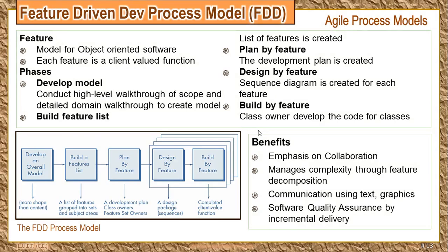The next model is the feature-driven development model, which is used for object-oriented development. Every feature represents all the functional requirements described by the client. There are five phases in total. The first phase is development of a model — an overall design of the client's requirements. The second is building a feature list by grouping requirements into sets and particular domains. The third is planning by feature — deciding the development plan or strategy: which feature to implement first, which last, and which to omit.